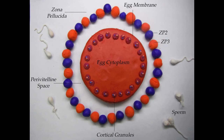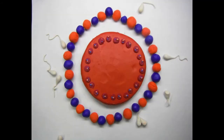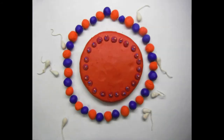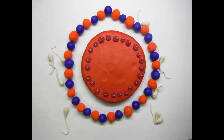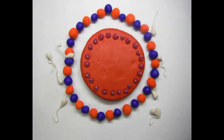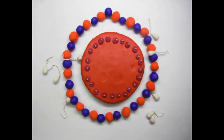Preceding fertilization, sperm race to the egg. Several may bind to the zona pellucida, but only one will bind the egg membrane. Sperm will bind Zp3 at the post-acrosomal region and penetrate the zona pellucida to reach the egg membrane.